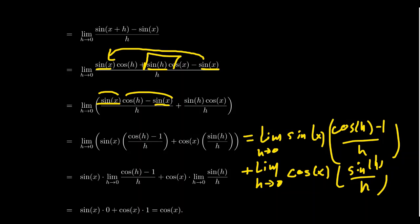Notice that both of these limits have factors of a trigonometric function involving the angle x — we have sine of x and cosine of x. But the limits are taken as h approaches 0, so as h gets closer and closer to 0, x is unaffected. X is actually independent of h; it is a fixed point in this consideration. Therefore, with respect to h approaching 0, sine of x and cosine of x are constants and can be factored out of the limits.